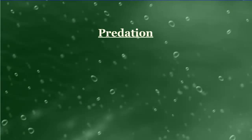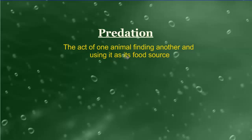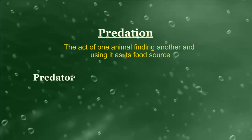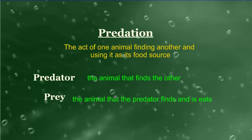Predation is the act of one animal finding another animal and using it as a food source. A predator is the animal that finds the other, and the prey is the animal that the predator finds and eats. This predator-prey relationship is called predation.